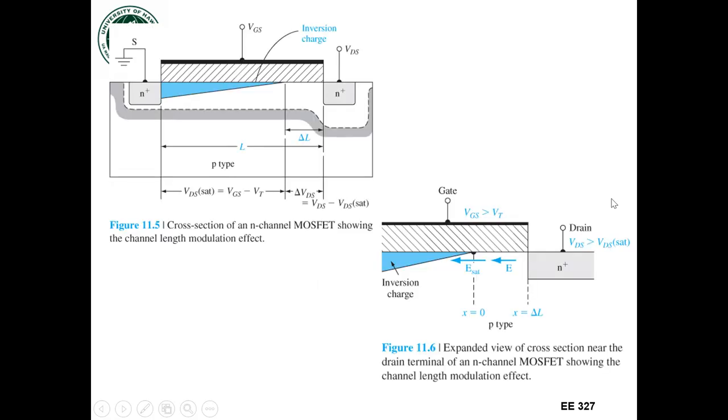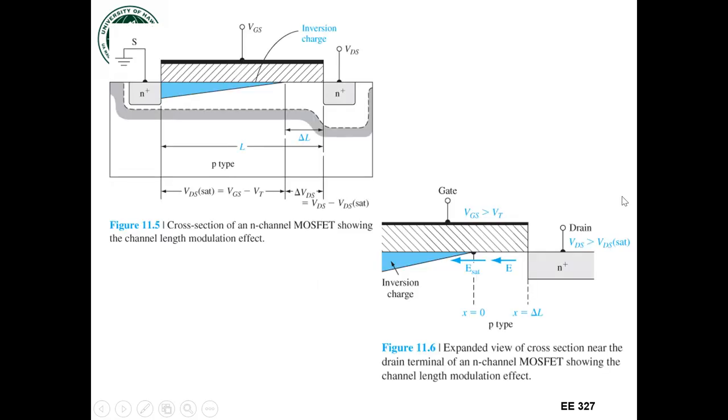So in this case, if we look at the cross section of the MOSFET, right at the threshold of inversion, I have that induced channel. And that induced channel extends between the source and the drain, but right at the drain terminal, it's going to go to a depth of zero.